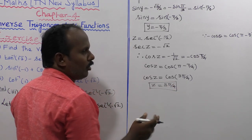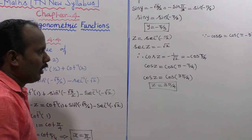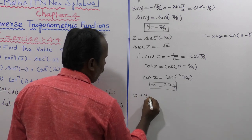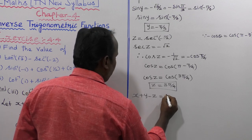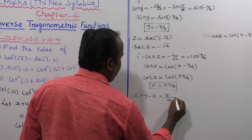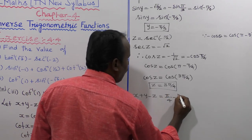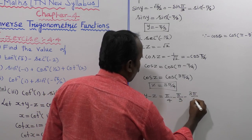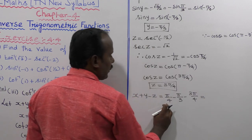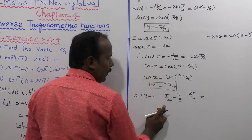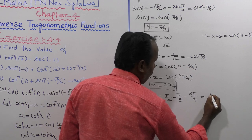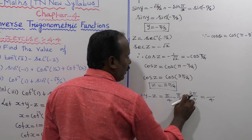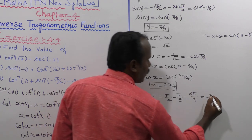Now we have the values: x is pi by 4, y is minus pi by 3, and z is 3 pi by 4. Computing x plus y minus z: pi by 4 plus minus pi by 3 minus 3 pi by 4. The first and third terms share denominator 4, giving numerator pi minus 3 pi, which is minus 2 pi over 4, then minus pi by 3.